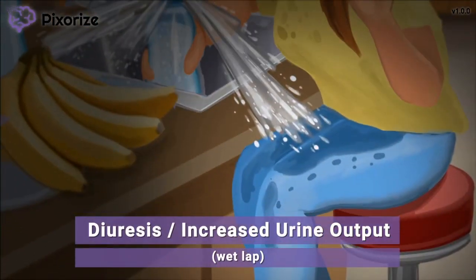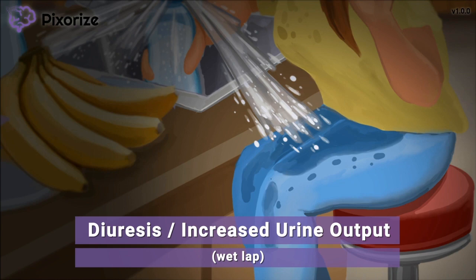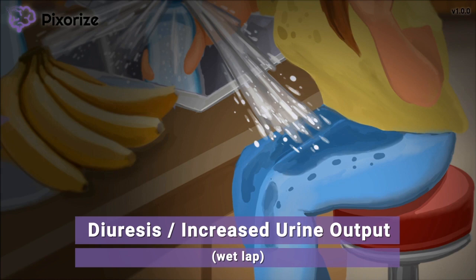The spraying water is also getting all over the girl's lap, which reminds us that spironolactone causes increased urination. There are some important nursing considerations related to this. First, closely monitor both the patient's urine output and kidney function — spironolactone won't be effective if the patient is in renal failure, so keep an eye on BUN and creatinine levels. You can also teach your patient going home on spironolactone to take the drug in the morning to prevent nocturia, or excessive urination at night.